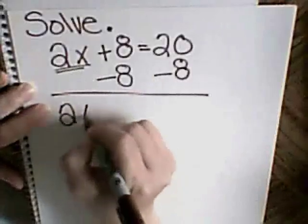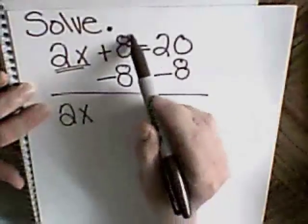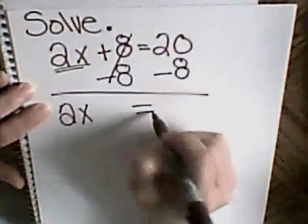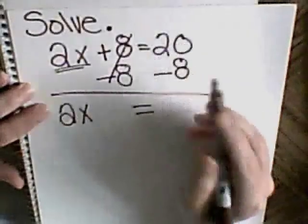I just bring down 2x. I didn't do anything with him. 8 minus 8 is 0. Bring down my equal sign. And 20 minus 8 is 12.